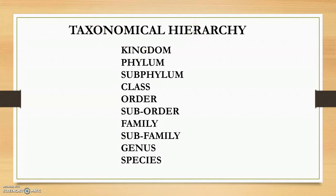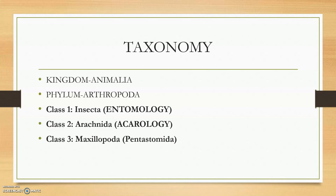The taxonomical hierarchy we will be dealing with is: kingdom, phylum, subphylum under the phylum, class, subclass, order, suborder, family, subfamily, genus, and species.